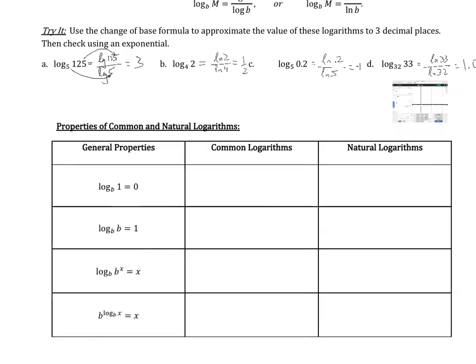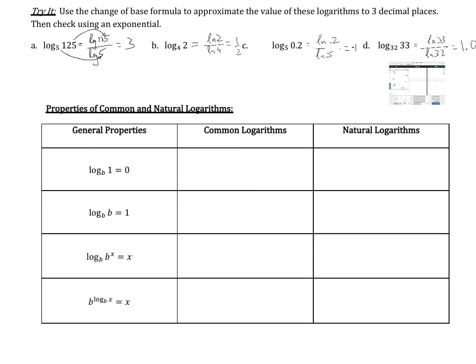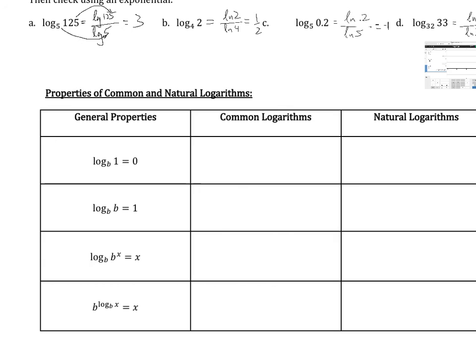We've seen these properties. These will show up. If we have log base b of 1 is 0. So what does that mean for common log? The log of 1, that's base 10, is going to be 0. Or, the natural log of 1 is going to be 0.